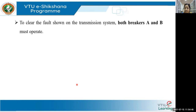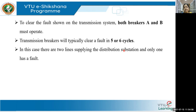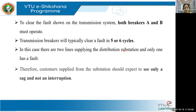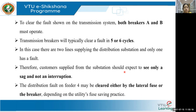If two lines are supplying the distribution system and one has a fault, the customer supplied from the substation should expect to see only a sag, not an interruption, as the second healthy line provides continuous supply. The distribution fault on feeder four may be cleared either by a breaker or by a fuse, depending on what practice the utility follows on a daily basis.